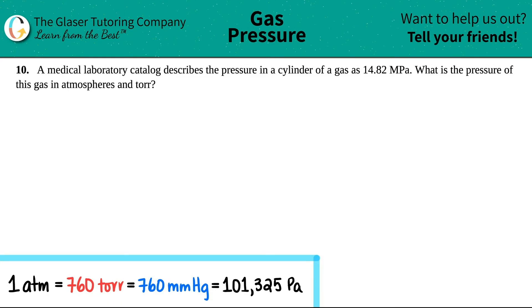Number 10. A medical laboratory catalog describes the pressure in a cylinder of a gas as 14.82 megapascals. What is the pressure of this gas in atmospheres and in torr?